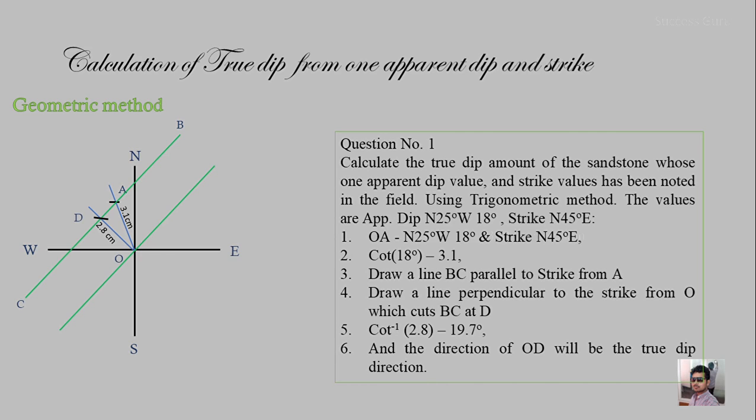The cot⁻¹ of 2.8 cm gives 19.7°, and the direction of OD is the true dip direction. Cross-checking both methods, we get nearly the same answer: 19.8° from the trigonometric method and 19.7° from the geometric method. This is how we calculate the true dip from one apparent dip and the strike direction.